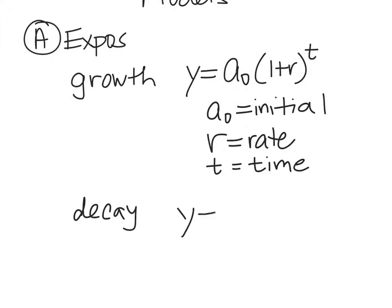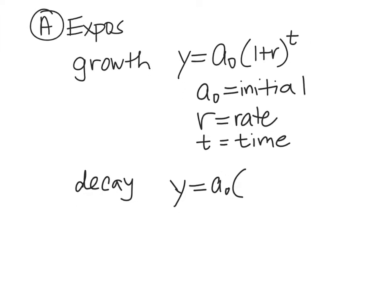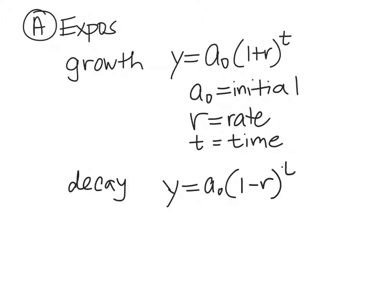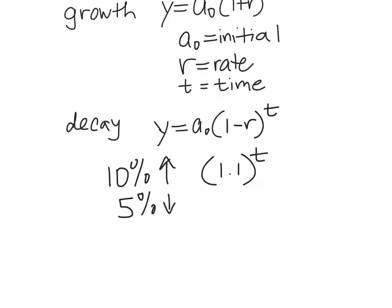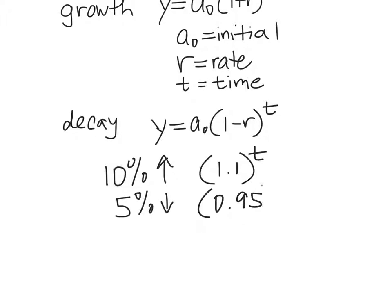Decay is y equals a sub 0. Do you remember what's inside here? 1 minus r to the t. So if something's decaying by 4%, you want to do 1 minus 0.04. So that number in there would be 0.96. And then everything else is the same as above. So think about it. Number 1.